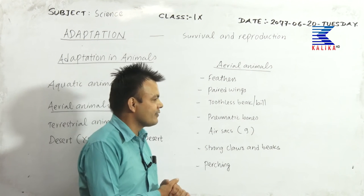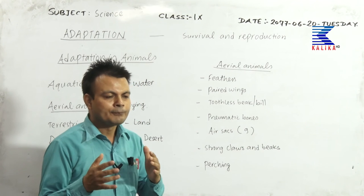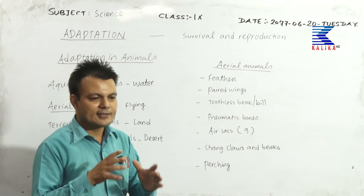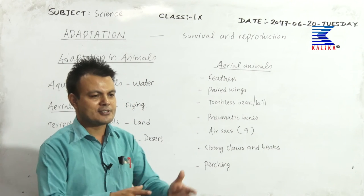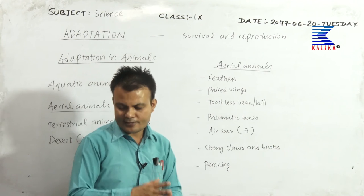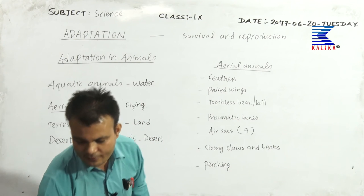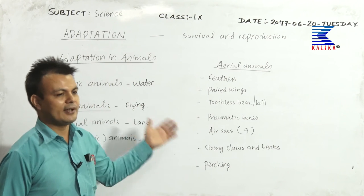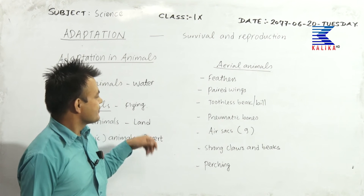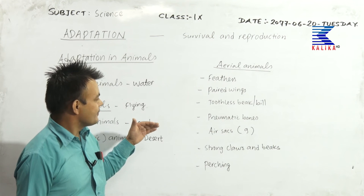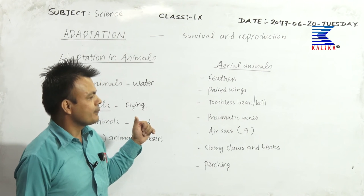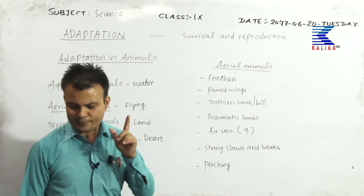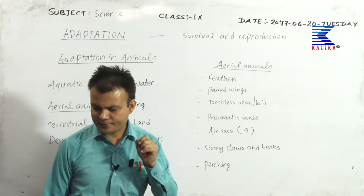The female bird has only one ovary, which reduces the body weight and makes it easier to fly. Apart from these, let's have a look at more things in the slide.